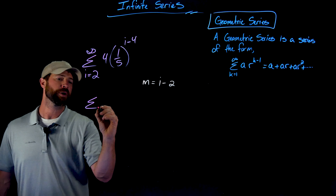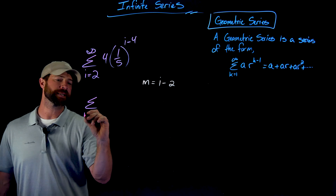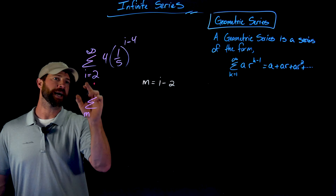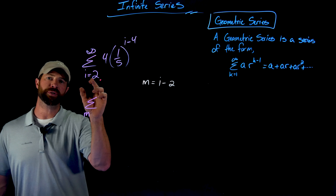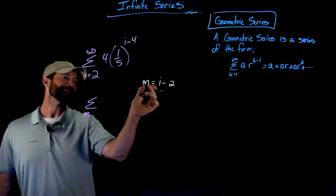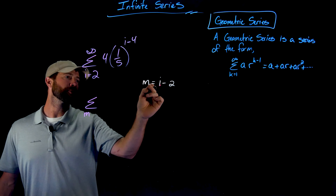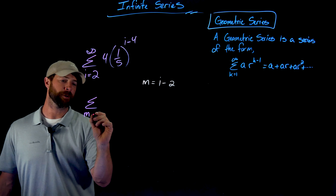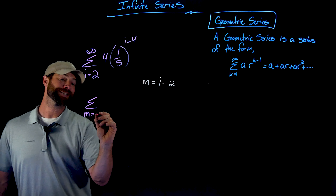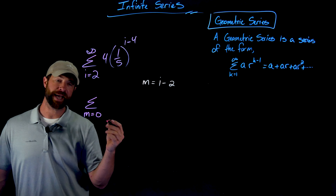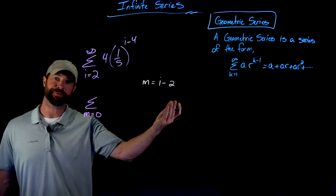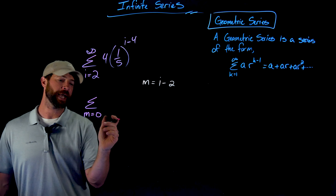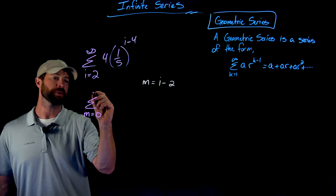Simply, what I ask is: if i started at 2, what is m when i is 2? Well, if i is 2, then 2 minus 2 is 0. So if I use the index of m in my definition of m, m would start at 0.